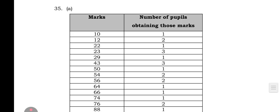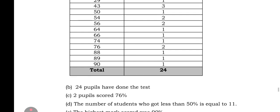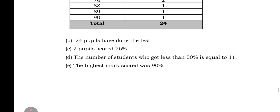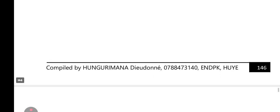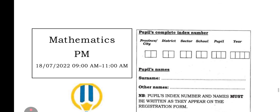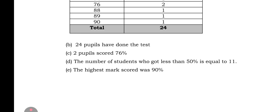The table of marks with respect to the pupils. These are the frequencies. Total frequencies: 84 pupils have done the test. 2 pupils scored 76. These are the answers that are asked. So these are the end of this question paper.